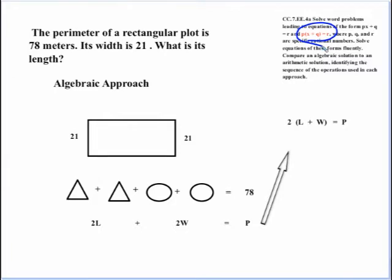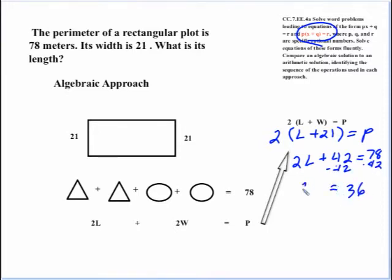And from this point, the solution is very similar to what we did from an arithmetic approach. In this case, we know that the length is unknown. The width was 21. And now, using our distributive property, we would have 2L plus 2 times 21 is 42 equals a perimeter, which we do know is 78. And then from here, it's the same as we did a while ago. Subtract 42 from both sides, we get 36. Divide by 2. And we get that the length is 18 as before.